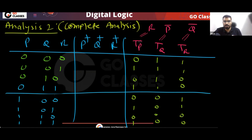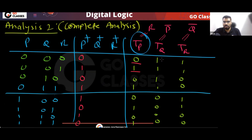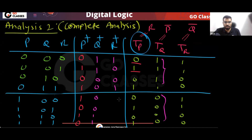Because of TP: a 0 means unchanged, a 1 means toggle. You can notice: toggle, toggle, unchanged, toggle — applying these rules for each state row. You can now create the complete state transition table using toggle and unchanged logic.